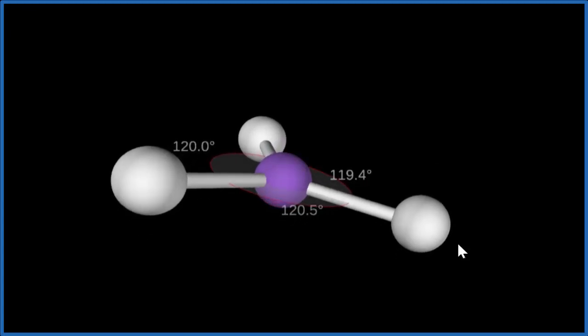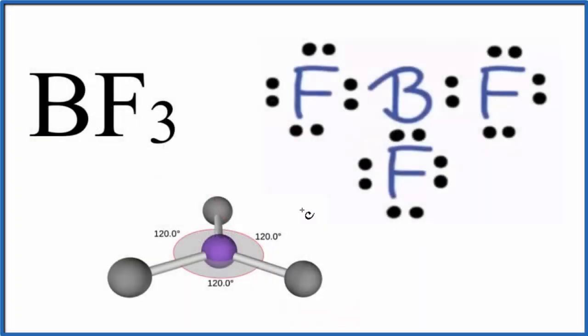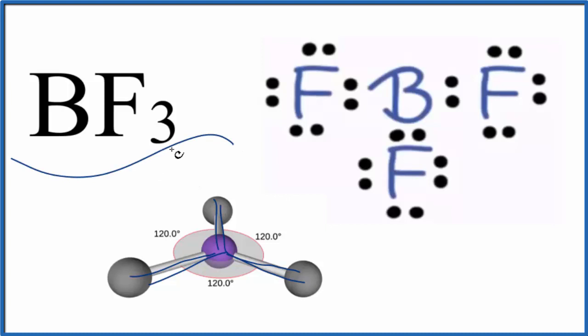Going back to our Lewis structure: the bond angles for BF3 are going to be 120 degrees, because we have this trigonal planar molecular geometry. This is Dr. B with the bond angles for BF3, boron trifluoride.